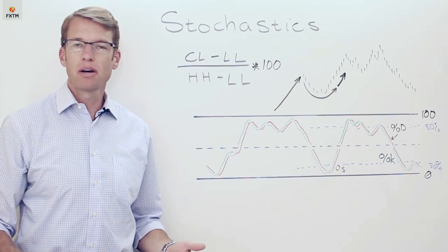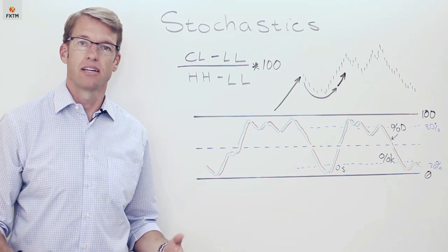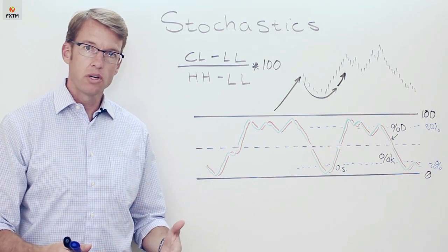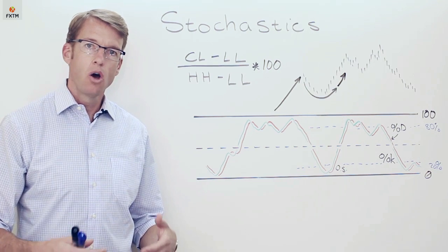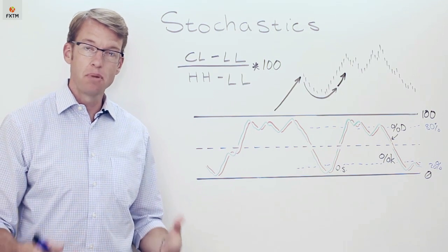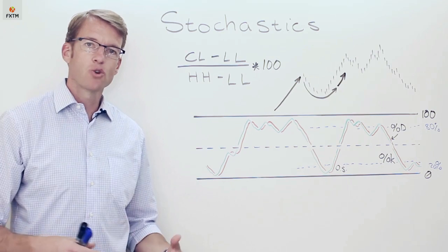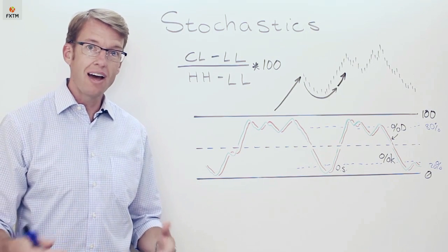A great way to think about the stochastics oscillator is that it's a momentum indicator. It tells us whether bulls are reasserting themselves in a bullish trend or bears are reasserting themselves in a bearish trend, so that investors can make sure that they're trading with the trend at the right time.